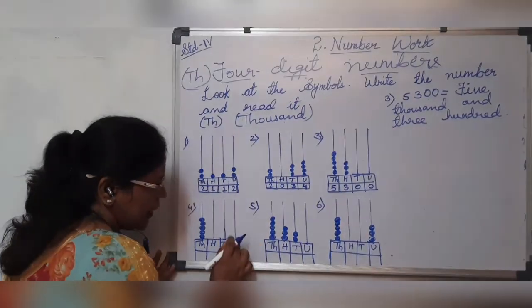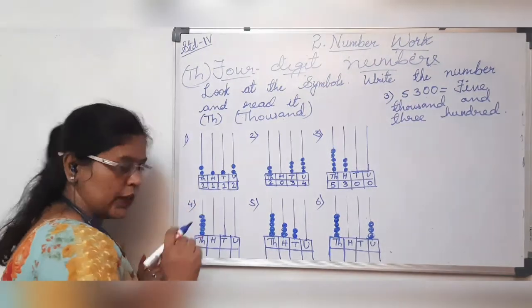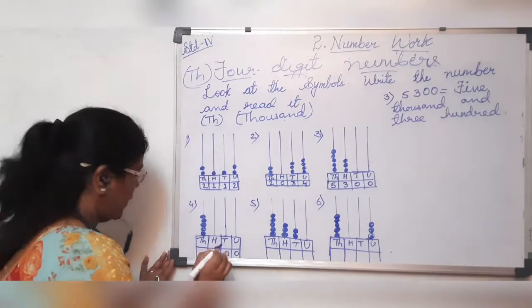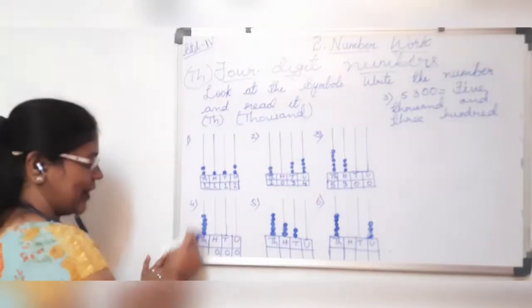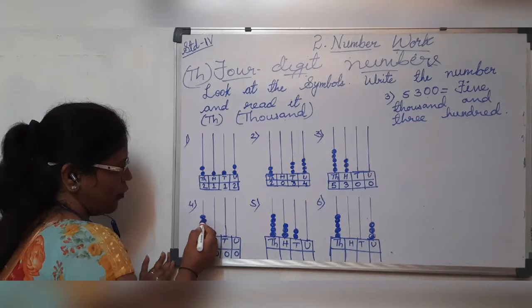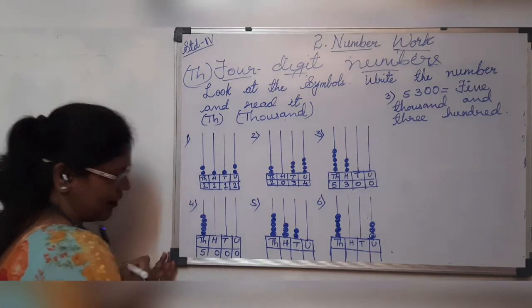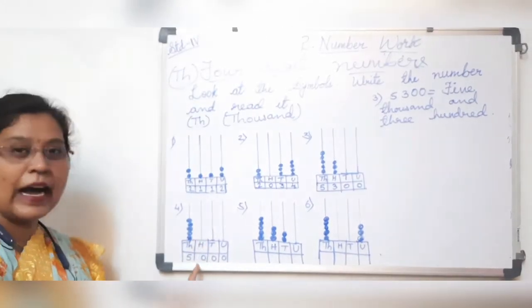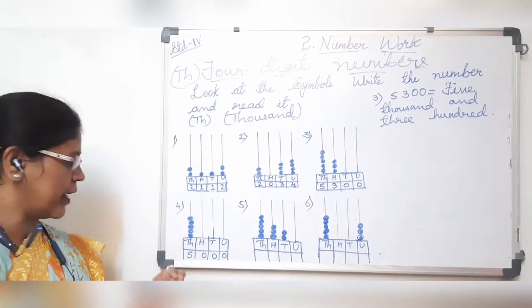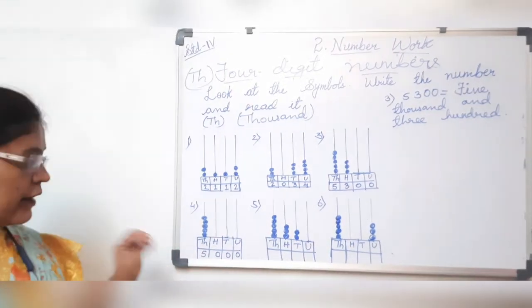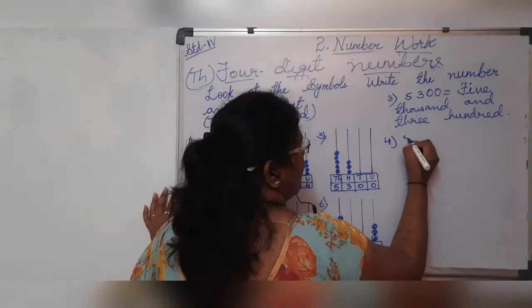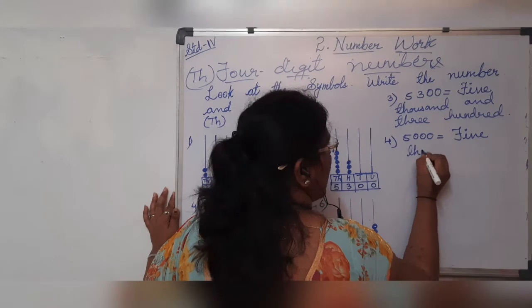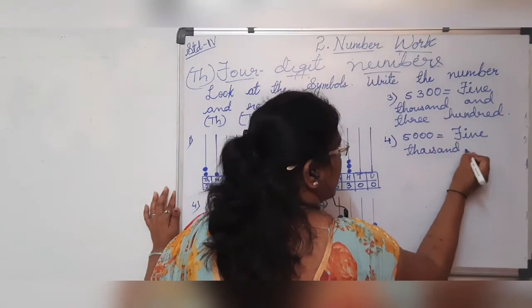The fourth sum: do you see any beads on the units place? No. So put 0. Tens place — no beads, put 0. Hundreds place — no beads, put 0. Thousands place — 1, 2, 3, 4, 5 beads. So it is a round figure. Units place 0, tens place 0, hundreds place 0, thousands place 5. So the number is 5,000 — five thousand. Write the spelling: T-H-O-U-S-A-N-D.